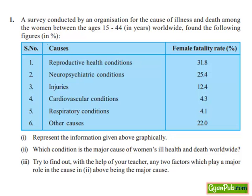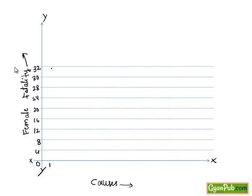They have asked us to represent the information graphically. So let's take a graph with causes on the x-axis and female fatality rate on the y-axis in percentage form.